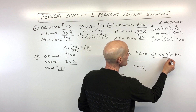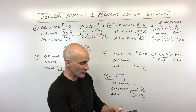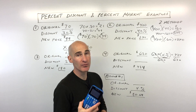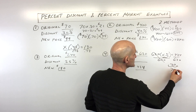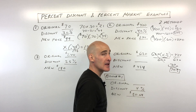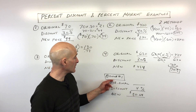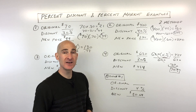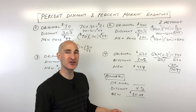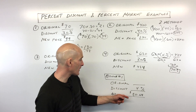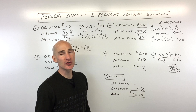Divide both sides by $620: 434 divided by 620 equals 0.70, which is 70% — meaning you're paying 70%, so the discount is 30%. For bonus problem one: the original price is unknown, the discount is 4%, and the new price is $80.64. Try that one on your own and put the answer in the comments.